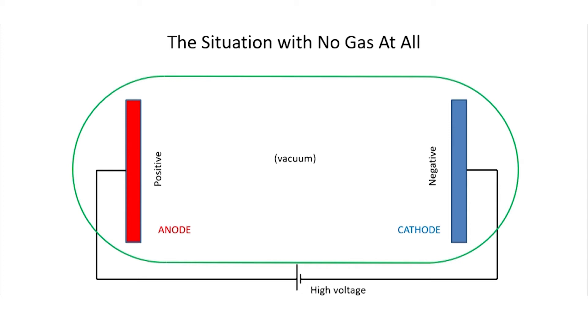In the previous videos, we've considered situations where there was a gas between the two electrodes. Now let's consider the situation where all the gas has been removed. The green line on this diagram, for example, might represent a vacuum tube where all of the air has been removed. Now is it possible to get a spark between the positive and negative electrodes if we put a high enough voltage difference between them? The answer, of course, is no. It's impossible to create a bolt of lightning or plasma when there's no gas present.